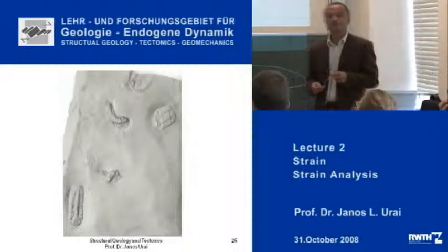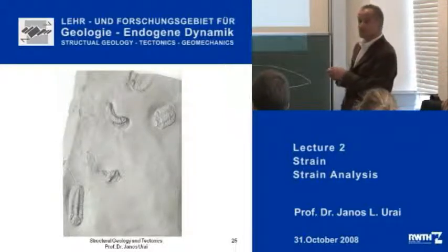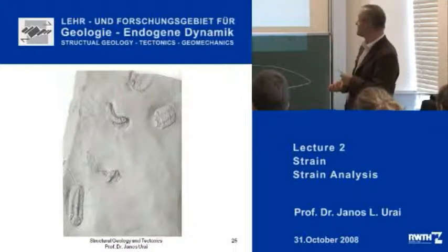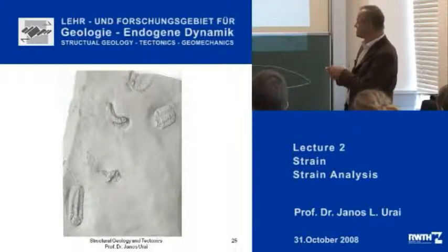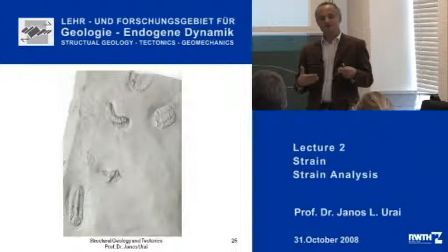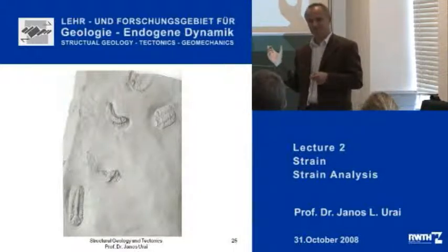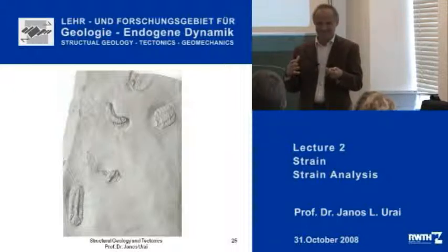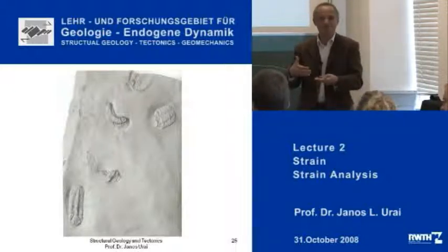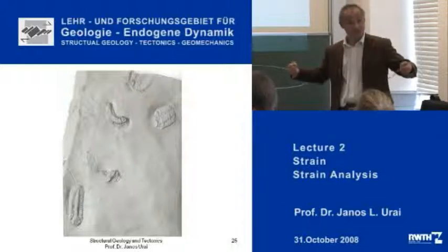Here is another example. We have these fossils on display here in the glass cabinets. These are trilobites, and we are looking down on the bedding plane. This trilobite is fat and short, and this trilobite is thin and long, and there are some strange-looking trilobites in this direction. In the beginning, paleontologists often made the assumption that these were two different species — until structural geologists showed, by undeforming them, that these were all the same trilobites, just stretched and shortened.